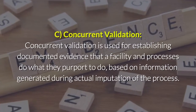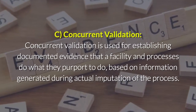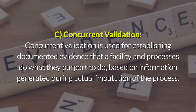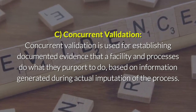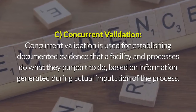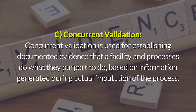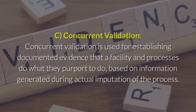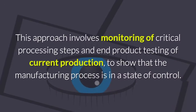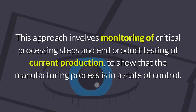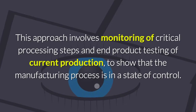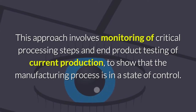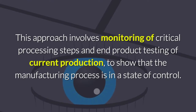Concurrent validation is used for establishing documented evidence that a facility and processes do what they purport to do, based on information generated during actual implementation of the process. This approach involves monitoring of critical processing steps and end product testing of current production to show that the manufacturing process is in a state of control.